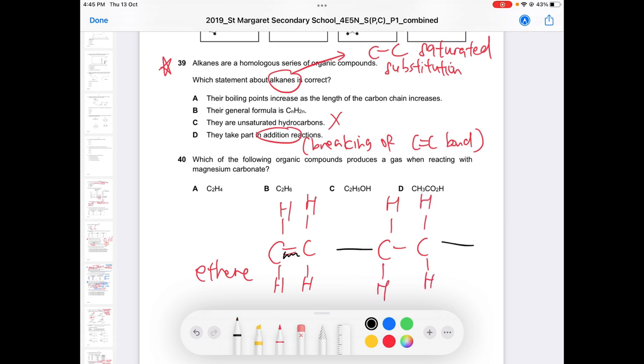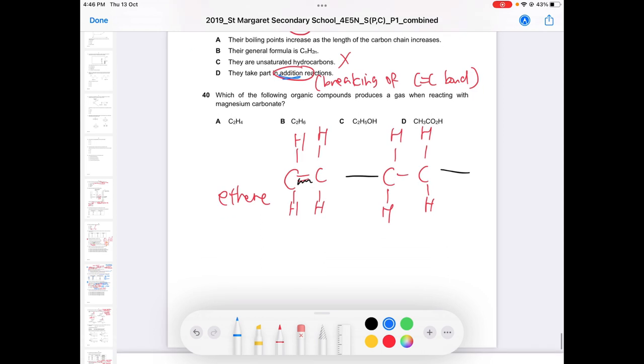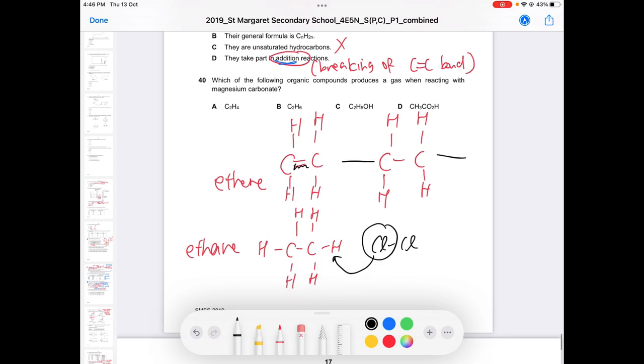Double bond broken to form this is called addition. You're adding something to it. Adding something to the compound. Substitution is the opposite, it's just substituting. For example, this one is my ethane. It undergoes substitution to replace. This one will replace one atoms. This one will replace one of the atoms to form, this one become chlorine here and then hydrogen here.